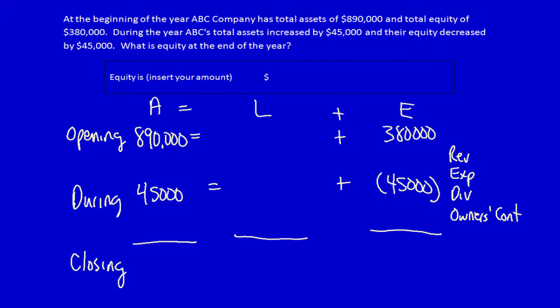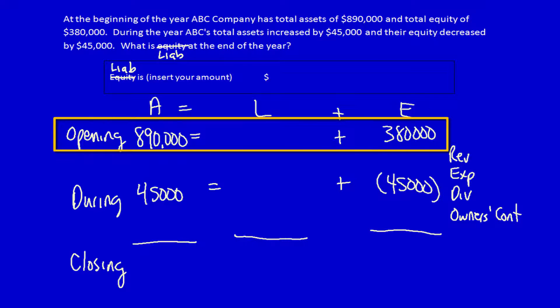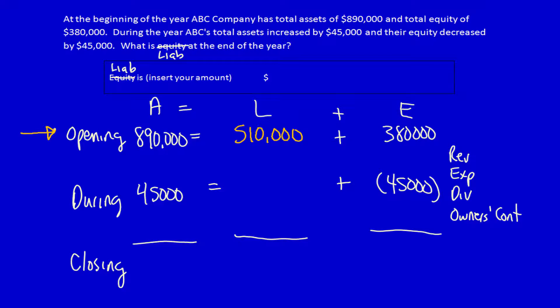Let's change that to: what is liabilities? That's a harder question. We know that we can either solve for the rows or the columns. Let's solve for the first row: 890,000 minus 380,000 is equal to 510,000. I solved the row.